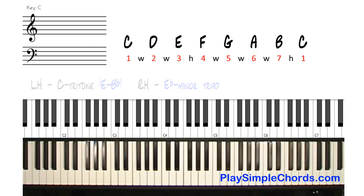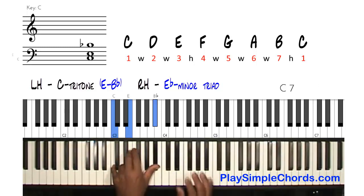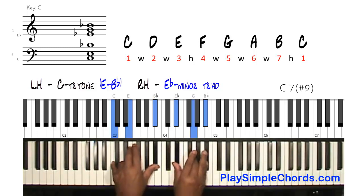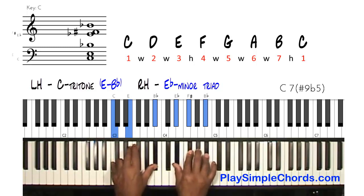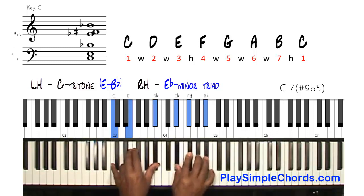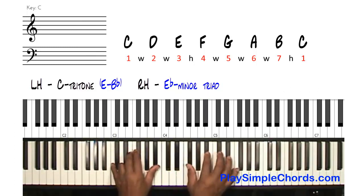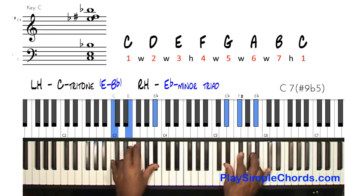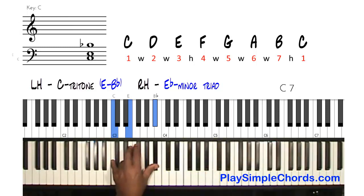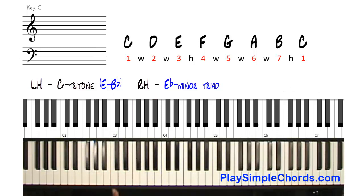The next chord tone we're going to use is still the flat three, but this time we're going to make it a minor triad. We're still going to use the one, three, seven. Instead of an E flat major, we're going to play an E flat minor triad, which gives us a sharp nine, a flat five, and we double the seven again. So in this case we have a C seven sharp nine flat five, based on the E flat minor triad of the chord C.